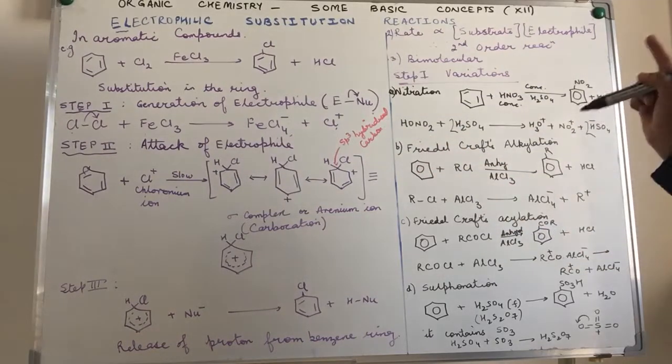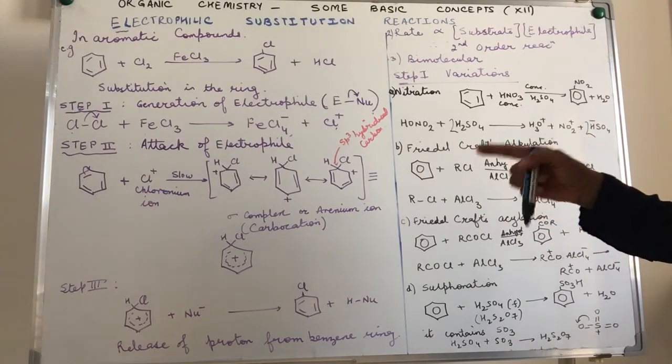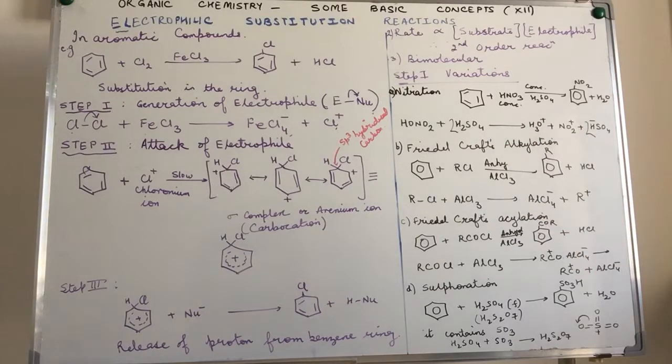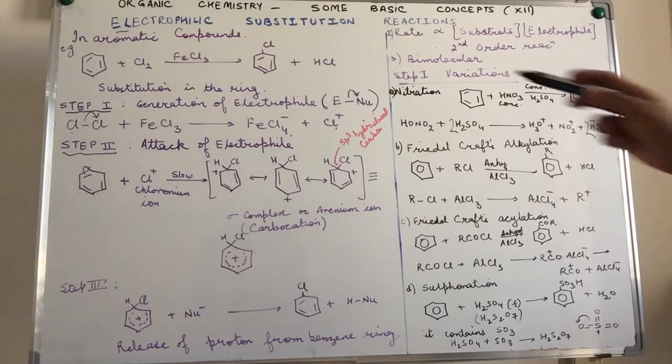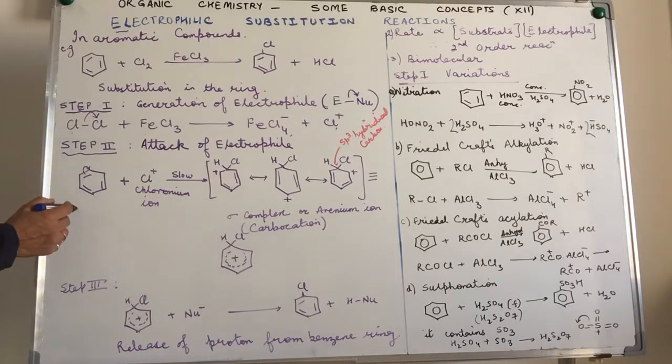The product of this particular step is the chloronium ion Cl+ and FeCl4-. In other words, it's giving us ions not free radicals, hence it is involving heterolytic fission of the chlorine molecule.